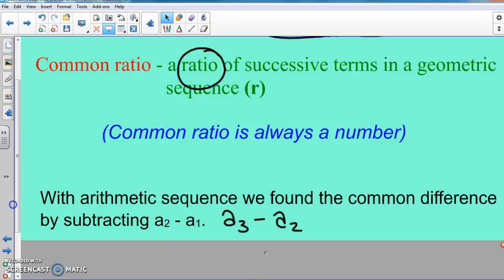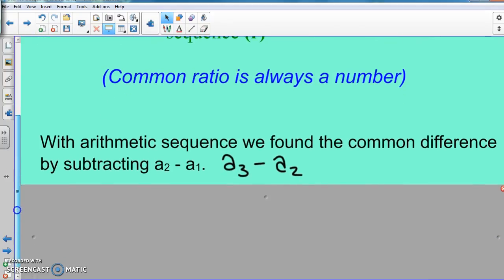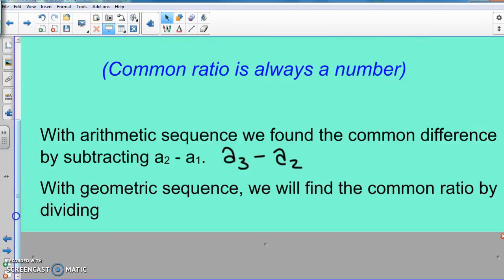Now when it comes to geometric, instead of subtracting, we have to do a different thing. For geometric, we will find the common ratio by dividing. So not subtracting this time, now we're dividing. So arithmetic is subtract, geometric is divide.